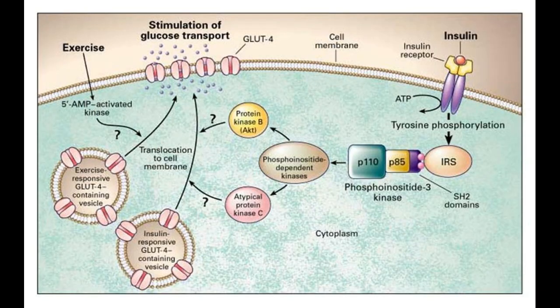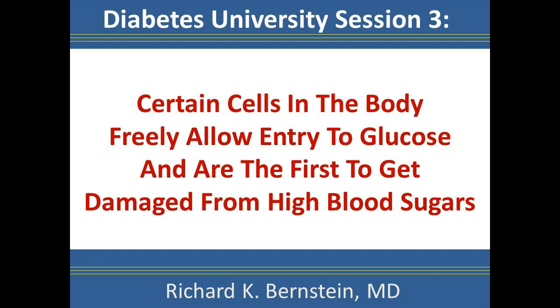We're going to talk about the insulin receptor and we have a diagram, a cartoon for you to see what I'm talking about. The cells of the human body can arbitrarily be broken down into two types: those that require insulin for the entry of glucose, and those that can be flooded with glucose even in the absence of insulin.